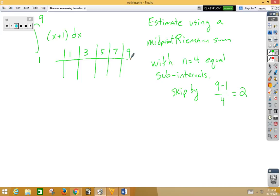But now we need midpoints. We start off again with our b minus a over n, so 9 minus 1 over 4. That would be 2. Now, we need to think about midpoints. So the midpoint between 1 and 3 would be 2. So we're going to plug a 2 in.